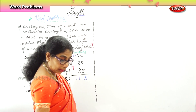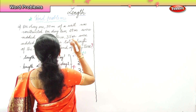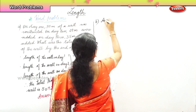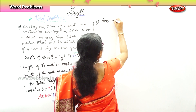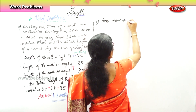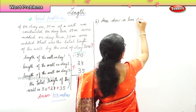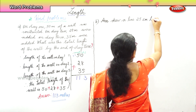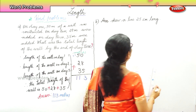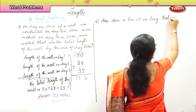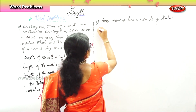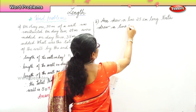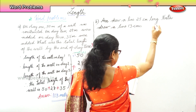Shall we work out another sum? Yes. The second problem: Anne drew a line 25 centimeters long. Neeta drew a line 13 centimeters long.